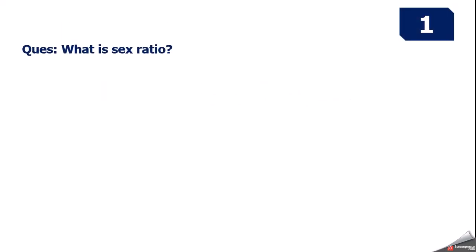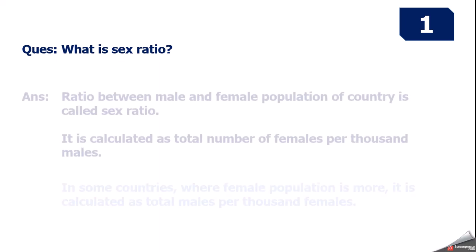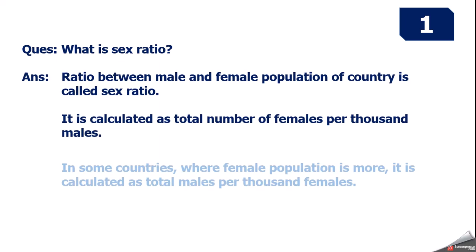Review question 1: What is sex ratio? Answer — Ratio between male and female population of a country is called sex ratio. It is calculated as total number of females per thousand males. Note: in some countries where female population is more, it is calculated as number of males per 1000 females.